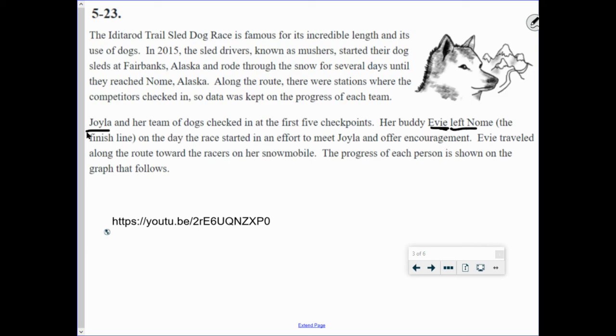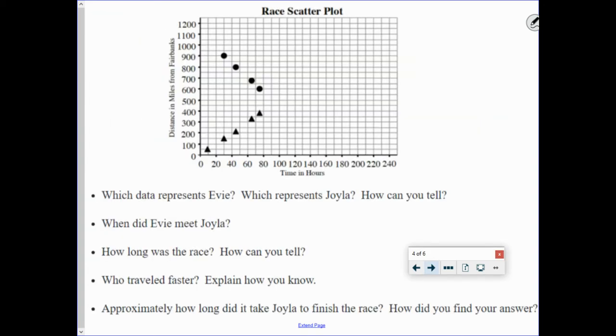Her buddy, Evie, left Nome, the finish line, on the day the race started in an effort to meet Joila and offer encouragement. Evie traveled along the route toward the racers on her snowmobile. The progress of each person is shown on the graph that follows. And this is the handout. This is a handout that I asked you to have. You really need to make sure you have it. It's going to help you a lot.